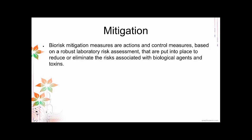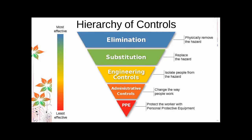In lessening the impact, you consider whether you have a vaccine, therapeutics, or a cure. If not, focus on prevention — lessen the probability of the virus spreading to you. We have here the hierarchy of controls, which ranks controls from most effective to least effective. The most effective is elimination: physically remove the hazard. The safest way to study Ebola is to not handle the Ebola itself — you can study it computationally.